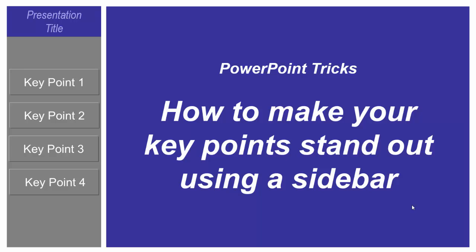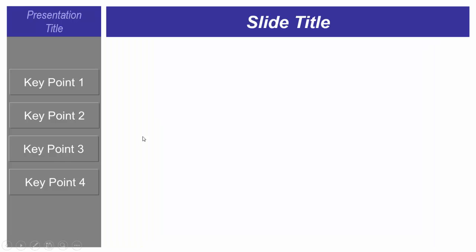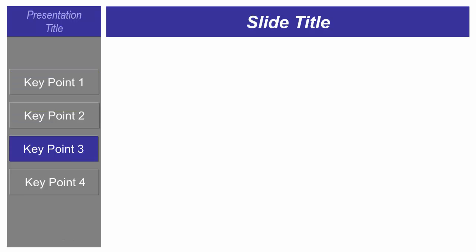Hello everyone. Today we're going to talk about how to make your key points stand out using a sidebar. We're going to make a template that looks like this. This is my sidebar, and you can see that my key points will always be visible to my audience. When I'm going through my presentation, the key point I'm speaking about will highlight on the sidebar.